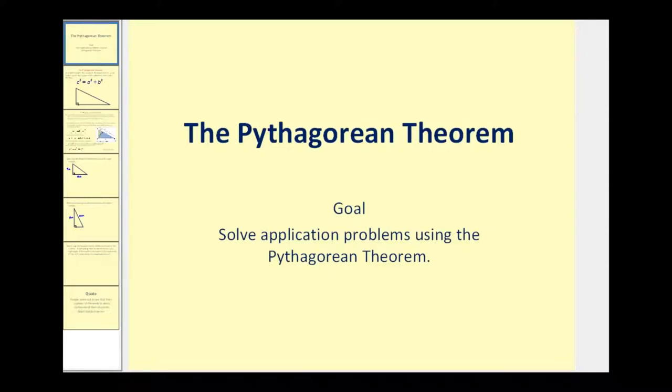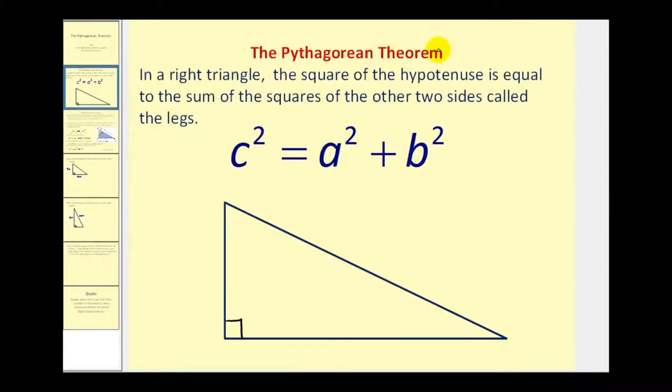Welcome to a quick tutorial on the Pythagorean Theorem. The Pythagorean Theorem states that in a right triangle, the square of the hypotenuse is equal to the sum of the squares of the other two sides, which are called the legs.